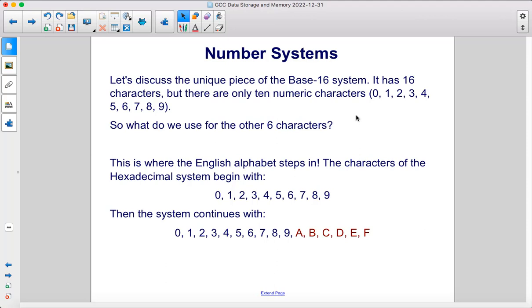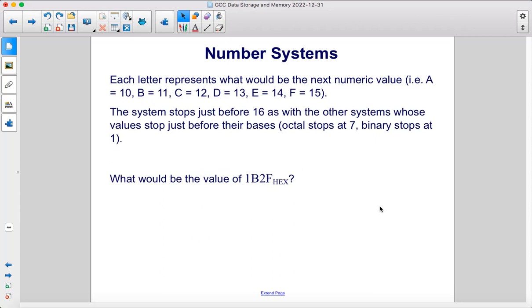Let's discuss the unique piece of the base 16 system. It has 16 characters, but there are only 10 numeric characters, 0 through 9. So what do we use for the other 6 characters? This is where the English alphabet steps in. The characters of the hexadecimal system begin with the numbers 0 through 9, but then the system continues with A, B, C, D, E, F. Each letter represents what would be the next numeric value, i.e. A is for 10, B is 11, C is 12, D is 13, E is 14, F is 15, and these are the decimal versions. The system stops just before 16, as with the other systems whose values stop just before their bases, like octal stops at 7, binary stops at 1.